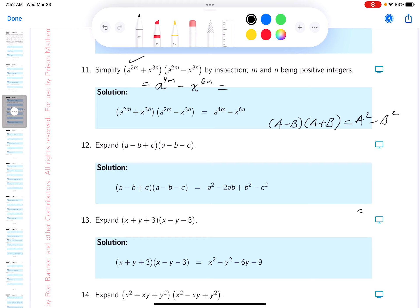Now, if you want to just multiply it out as written, you can do that too. What are you going to get? a to the 4m minus a to the 2m, x to the 3n. Then you're going to get plus a to the 2m. I'm using the distributive property of multiplication.